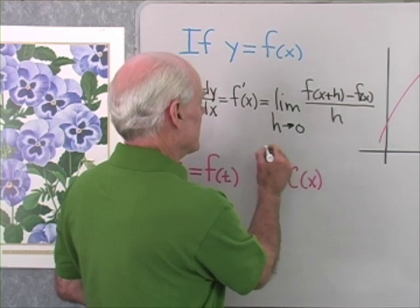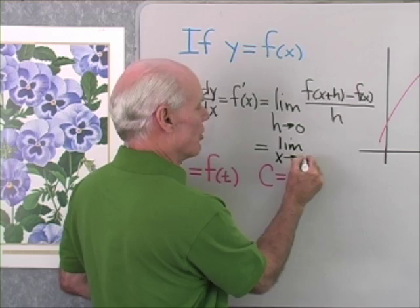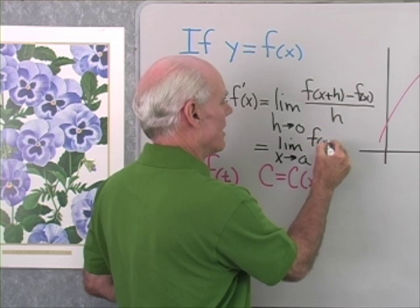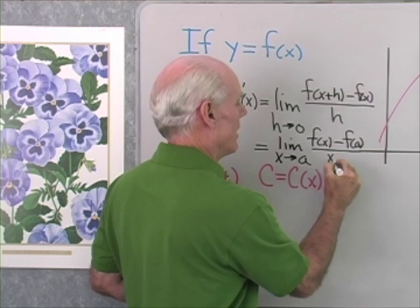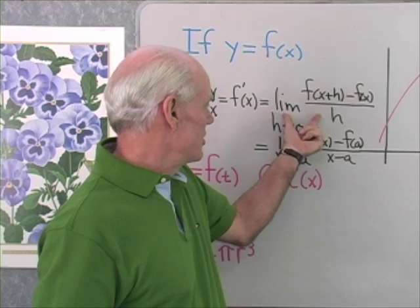Sometimes you write this limit another way: the limit as x goes to a of f of x minus f of a, all divided by x minus a. That's another way to look at the derivative. But whether you use this definition or this definition, they both amount to the same thing. They're limits.